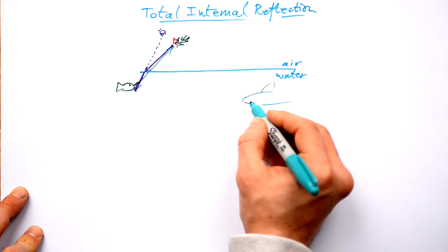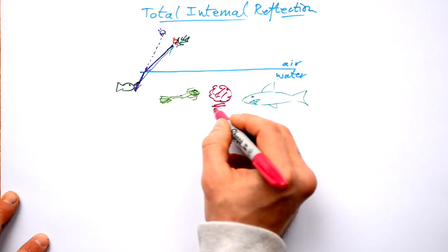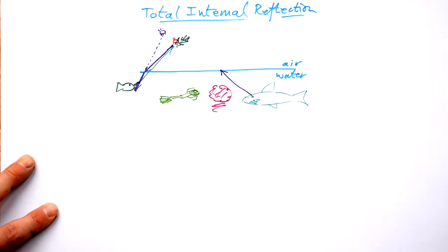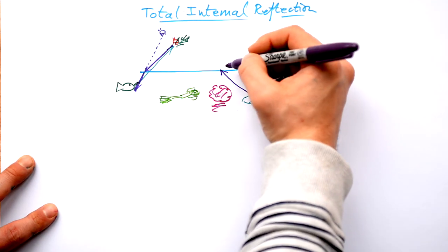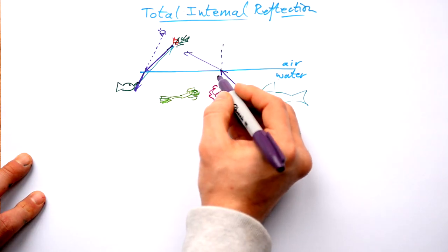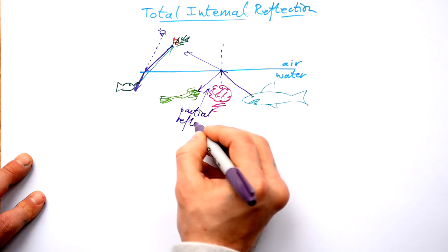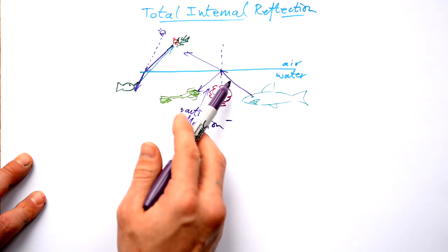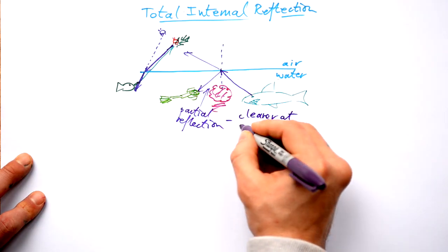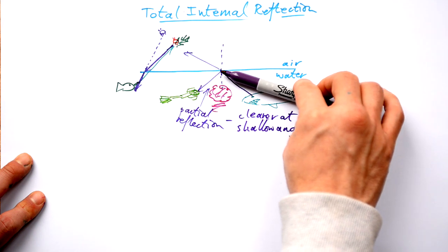Now if you were a shark and there was a scuba diver with some coral in between so they can't see each other directly — could the scuba diver see the shark via reflection on the surface? Light from the shark comes up and is refracted, bending away from the normal as it exits water into air. But you might not know that we always get a partial reflection as well. This partial reflection gets stronger at shallower angles.